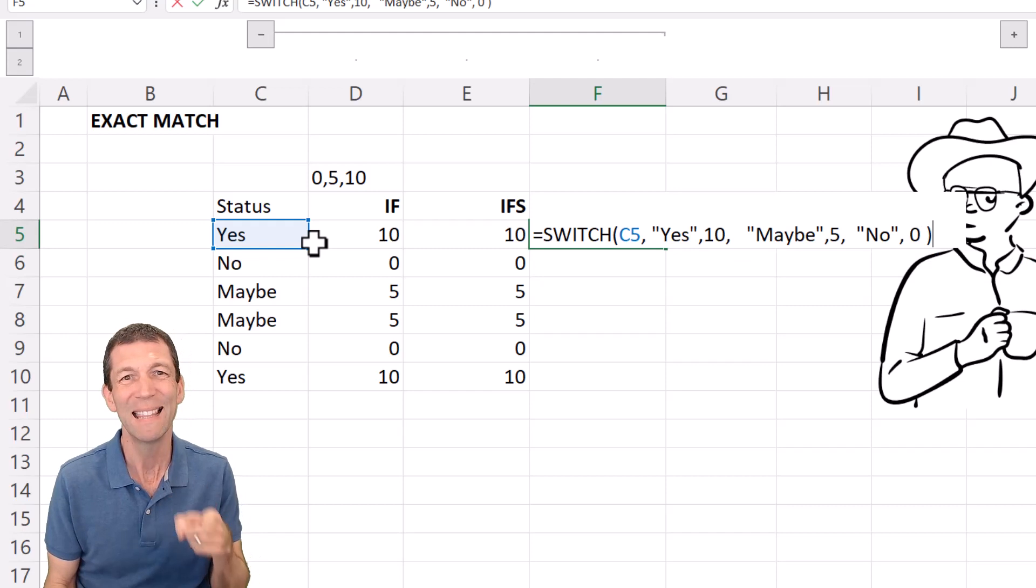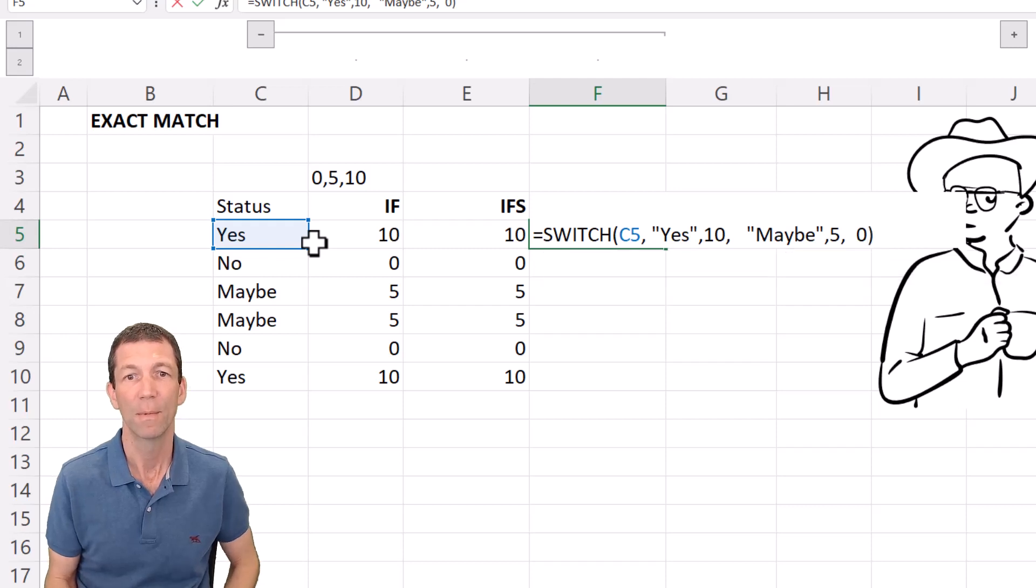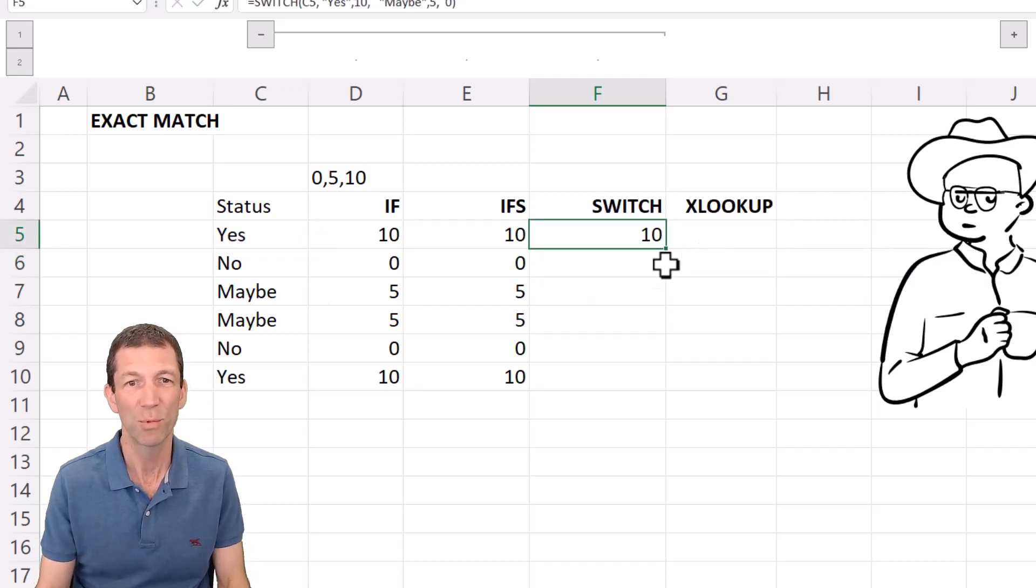You don't even need that no if you've only got those three options, you can just say otherwise 0. Okay so switch comes with an optional sort of at the end if there's nothing else that it finds just chuck that in.